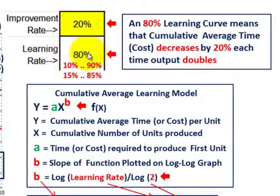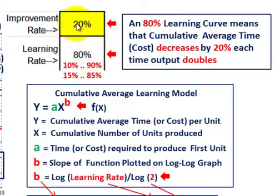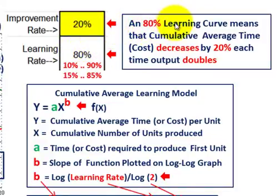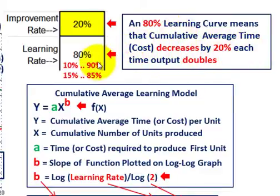Our examples are going to be based on that, and we'll also show the 10% improvement rate versus the 90% learning rate just to make the comparison. The improvement rate is less than the learning rate percentage-wise. With an 80% learning curve, it means our cumulative average time or cost is going to decrease by 20% each time our output doubles. With a 90% learning curve, the cumulative time only decreases by 10%.